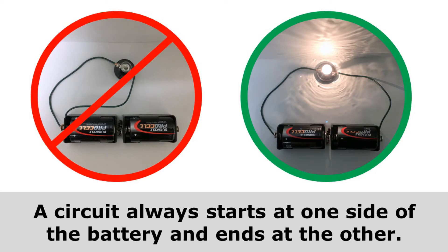There are a couple of basic facts about circuits you need to know. One is that a circuit always starts at one side of the battery and ends at the other. You can see on the right that this circuit is working because it starts on one side of the battery and ends at the other. But the circuit on the left will never work because they tried to start and end that circuit at the same side of the battery.